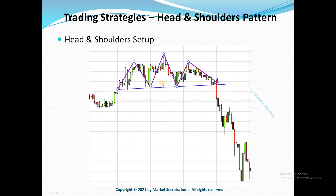Now the third item is your right shoulder. It is again an inverted U or an inverted V shape. In this case, the buyers make a final attempt to push the price higher, but it failed to break even this previous high — that is your head. Then the sellers take control and push the price towards your neck line. This forms another inverted U or an inverted V shape, completing the formation of your right shoulder.